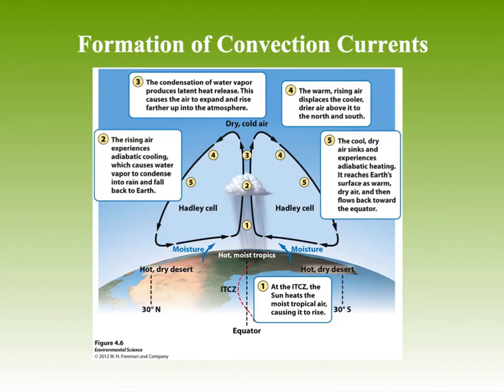Welcome back. This is AP Environmental Science Chapter 4, and we're going to talk about the formation of convection currents, specifically in the Hadley cell. Convection is just the movement of molecules, whether that's in a liquid or a gas. This is important because this is how heat is transferred in the atmosphere around the Earth and how weather events occur. We're going to focus on the Hadley cell in this video.